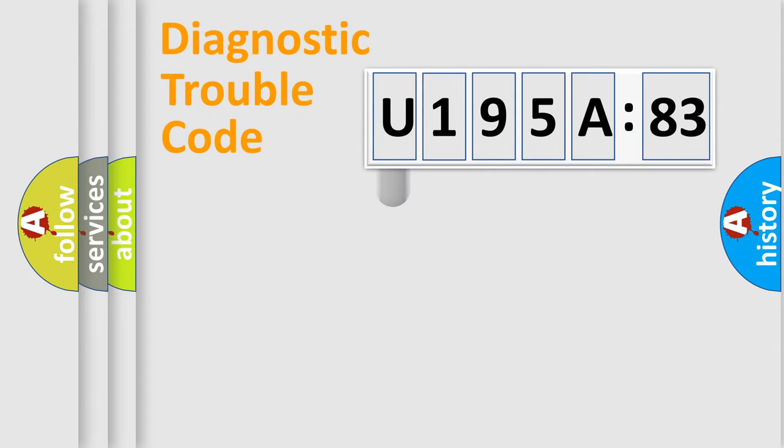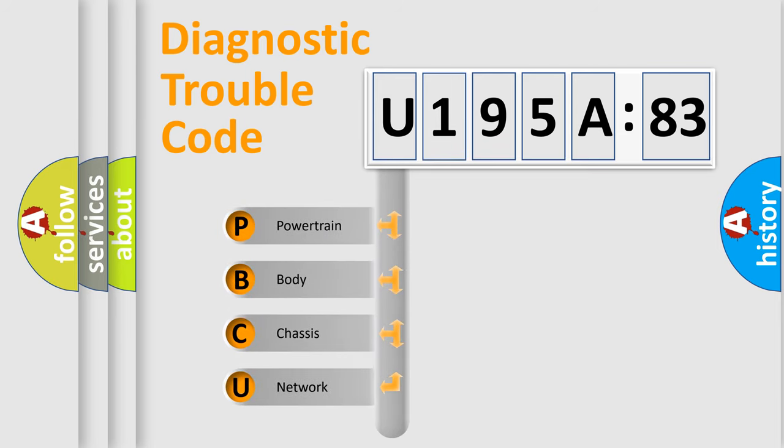First, let's look at the history of diagnostic fault code composition according to the OBD2 protocol, which is unified for all automakers since 2000. We divide the electric system of automobile into four basic units.